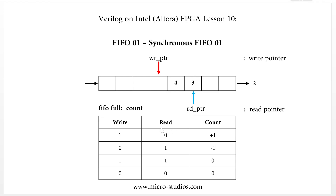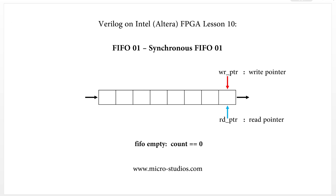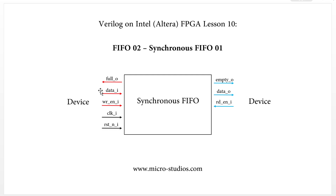Only when there is a write action and a read action does the count value change — either increase by one or decrease by one. This is the relationship between write, read, and count. With this table we are able to code it, and the count value tells us whether the FIFO is full or empty. The write device writes data into the FIFO according to the full signal, and the read device reads data out according to the empty signal.